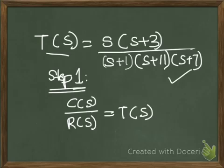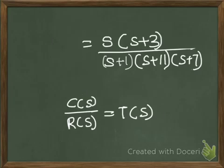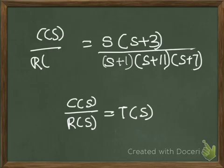The first step to find out the step response or any time response is to write it in the form of C(s)/R(s) = T(s). So what we have here is C(s)/R(s) = s(s+3) / [(s+1)(s+11)(s+7)].